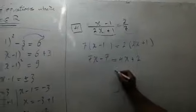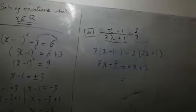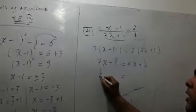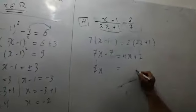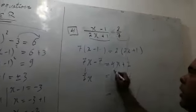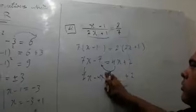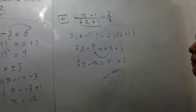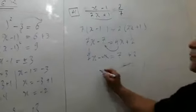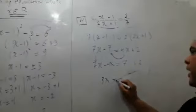Collect the variables in one side and the numbers in the other side. 7x negative 4x. Don't forget negative. It will be positive. 7 minus 4, it will be 3x equals 9.